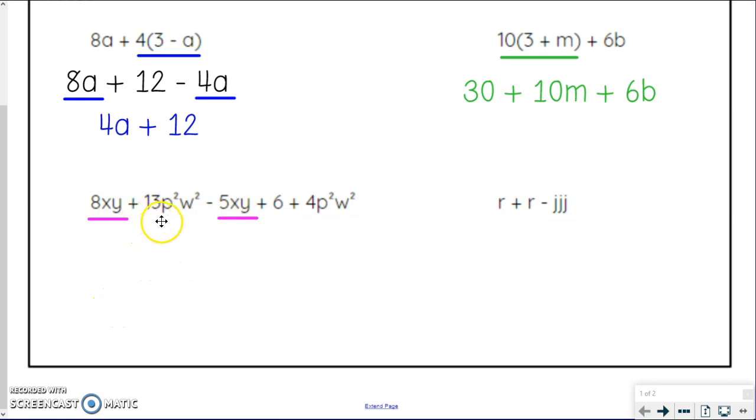So then I look, and I've got a 13p squared w squared. That is a crazy term right there, but that is all one term, 13p squared w squared. So I'm looking to see if I have any other of those, which I do, crazy enough. All the way down here, I have a 4p squared and w squared. And so I'm going to take those. I'm going to do 13p squared w squared plus 4p squared w squared to get 17p squared w squared. Wow, that was quite a mouthful.